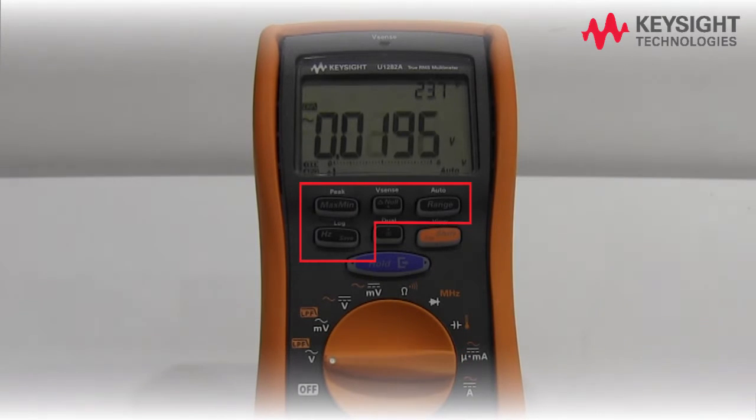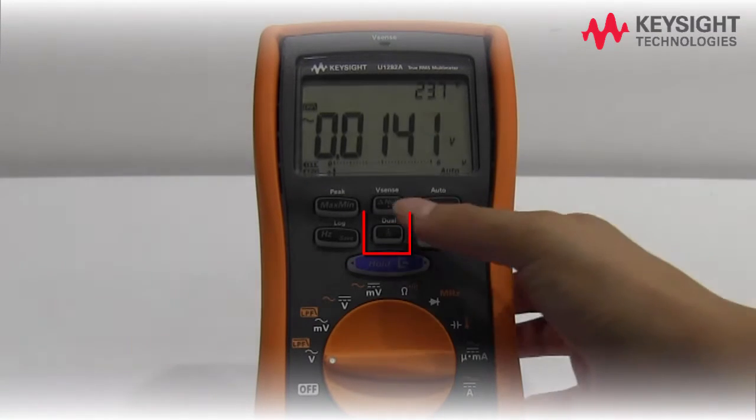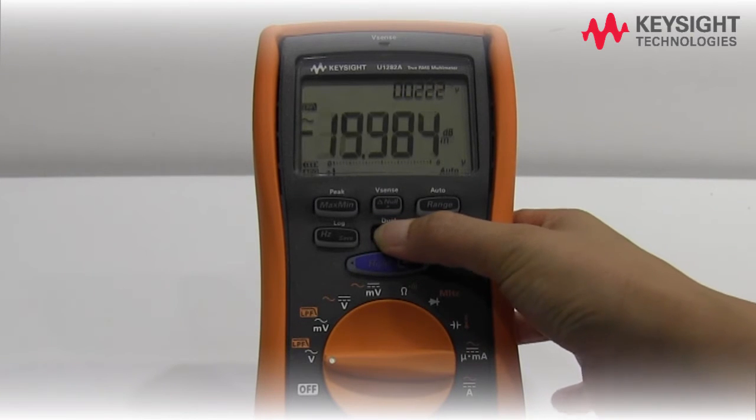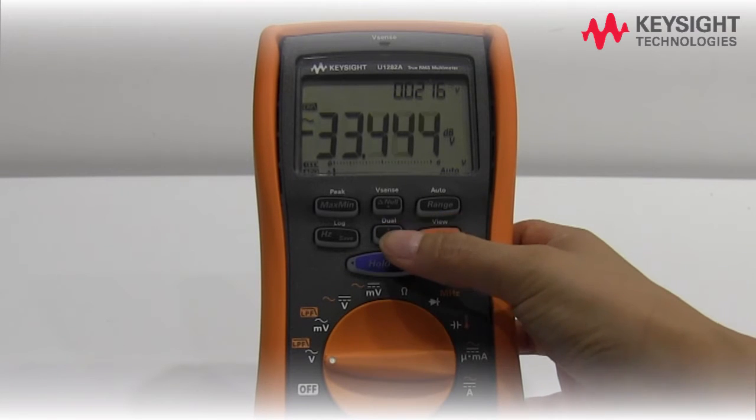Press these keys to access the multimeter features such as HOLD, MAX MIN and so forth. Press this key for more than one second to toggle between the available dual display modes for the supported measurement functions.